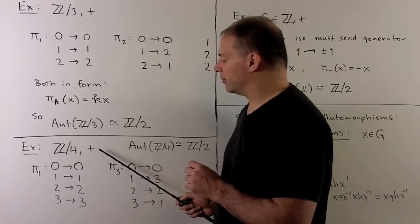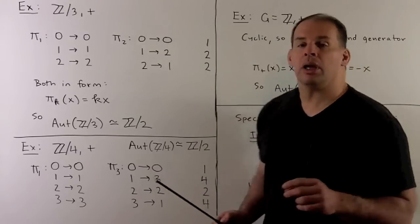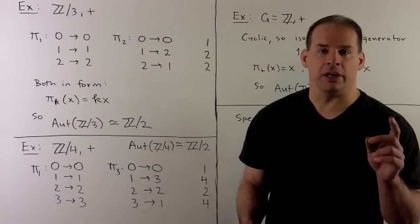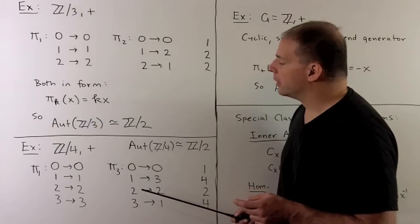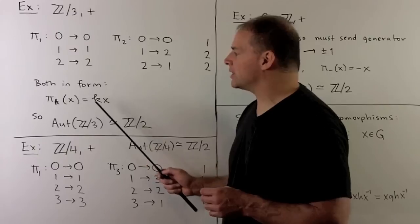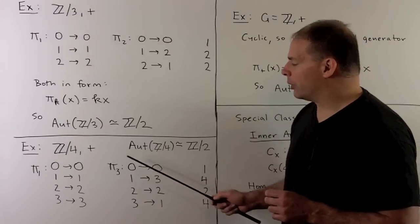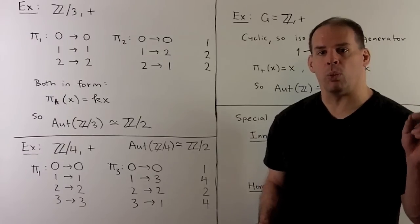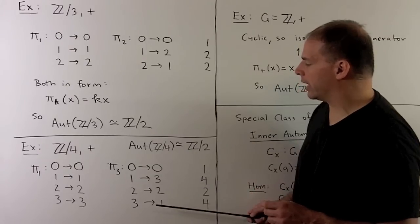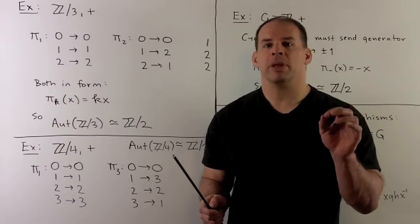Now let's look at Z mod 4 under addition. Same idea: 0 goes to 0. We look at orders — there's a unique element of order 2, and since order is preserved under isomorphism, 2 goes to 2. Our options are either to leave 1 and 3 alone or to switch. Again, we can write these in the form pi_k(x) = kx. Check: 3 times 2 is 6, subtract 4, get 2; pi_3(3) gives 9, subtract 8, get 1. Pi_3 has order 2 — just a double switch.